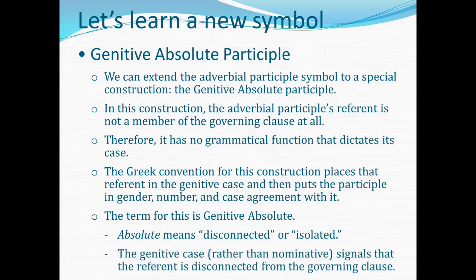The genitive case in this construction, rather than the nominative, is used to signal that the referent is disconnected from the governing clause. That referent is not in the genitive because it has a normal genitive case relation, like possession, to something in the governing clause. Instead, it's functioning as the subject of a verb form — that participle. But instead of being in the nominative, as most subjects are, it's placed in the genitive to signal a disconnection from the governing clause. That's the only reason for the genitive case here, and that's where the term genitive absolute comes from — the genitive case used to isolate that word from its governing clause.